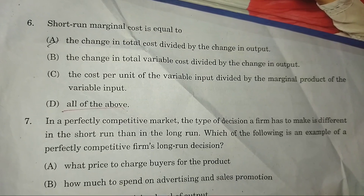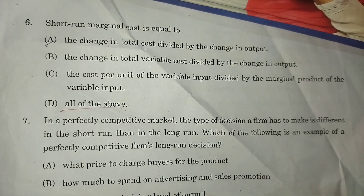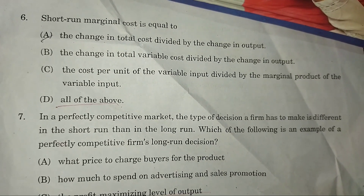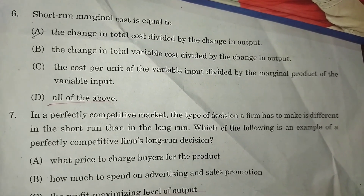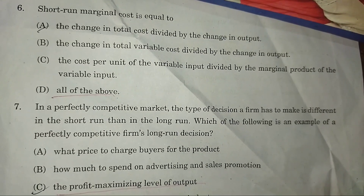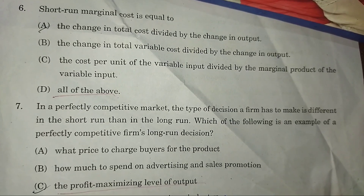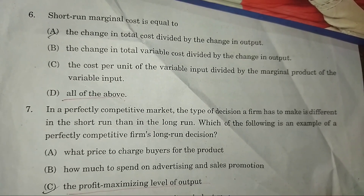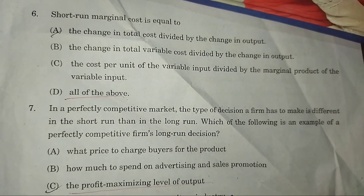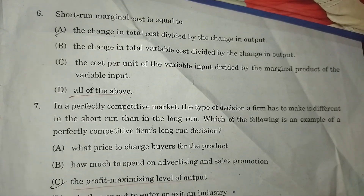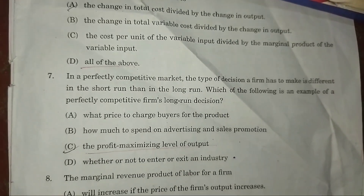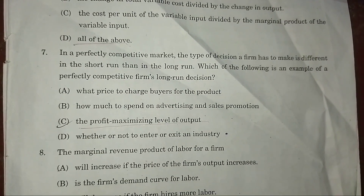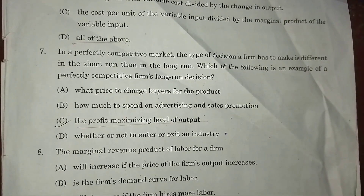The short-run marginal cost is also equal to the change in total variable cost divided by change in output, or the cost per unit of variable input divided by the marginal product of the variable input. Answer: D — all of the above.